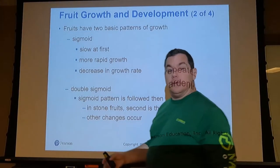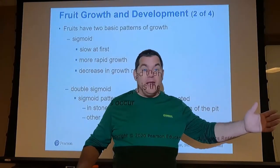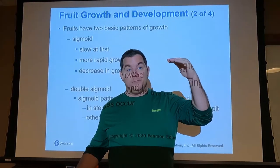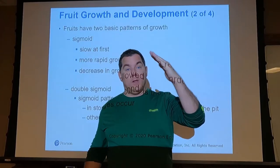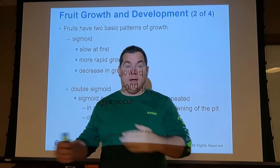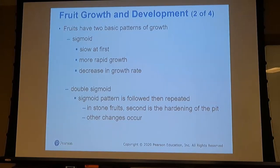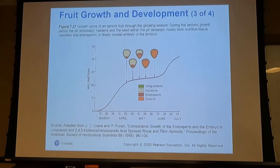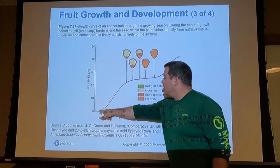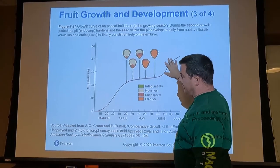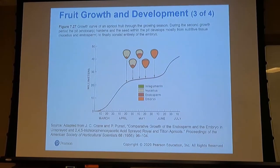At some point that growth stops — I'm 5'10" and I haven't grown an inch since high school. Then there's a double sigmoid pattern, which is just two sigmoidal curves: low growth, a growth spurt, it levels off, and then another growth spurt before the growth stage for that fruit ends.